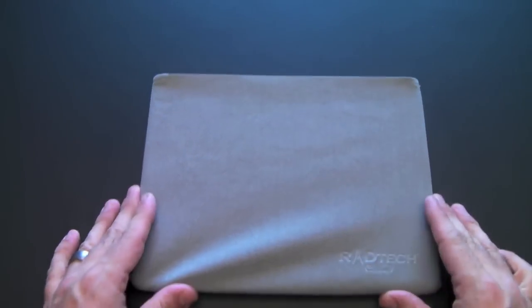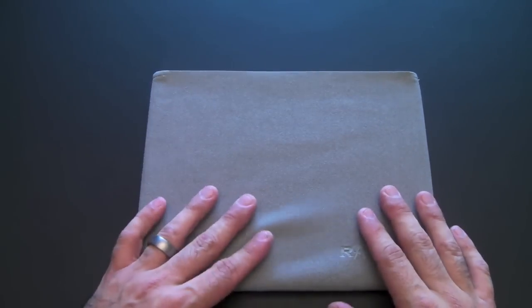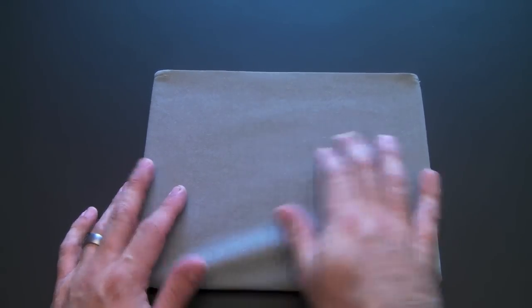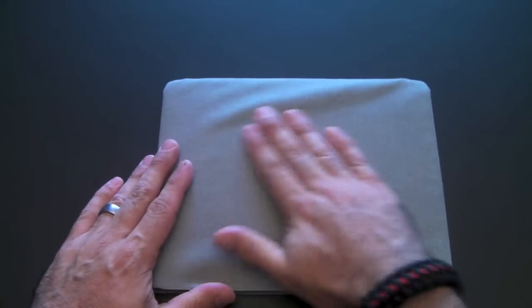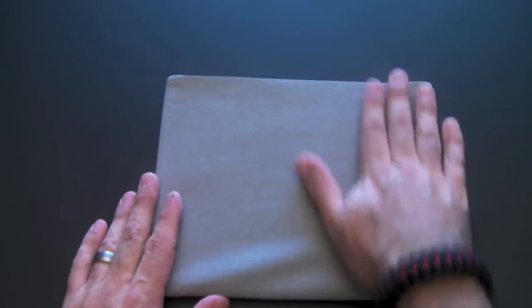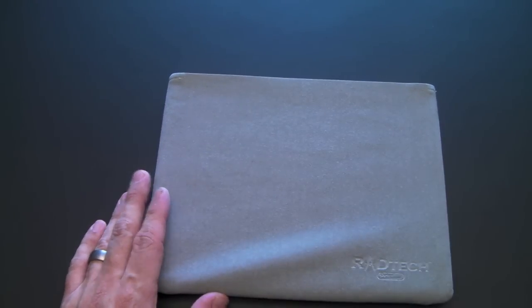What's great about this is this Optex material actually cleans your device. So while it's in there, the screen is being cleaned. The back housing is being cleaned. Dust particles and stuff like that's being wiped away, and the screen, as you pull it out, is going to come out looking pristine.